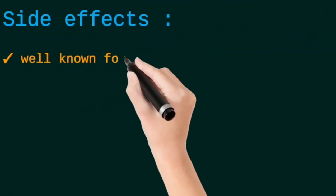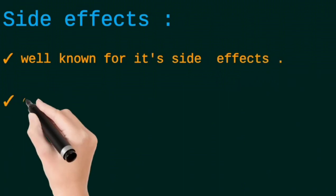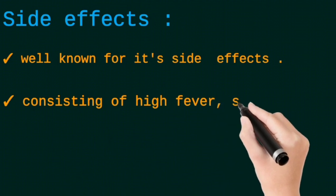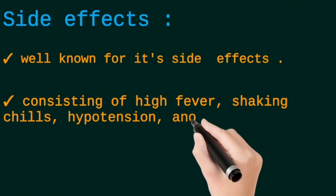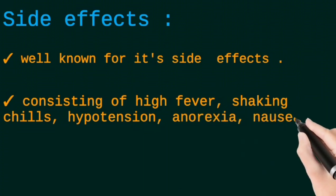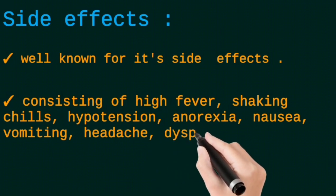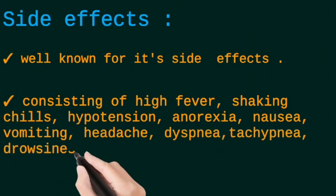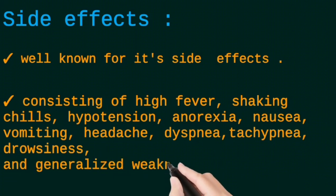Amphotericin B is well known for its side effects, consisting of high fever, shaking chills, hypotension, nausea, vomiting, headache, dyspnea, tachycardia, drowsiness, and generalized weakness.